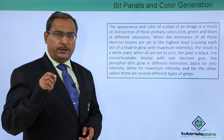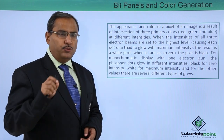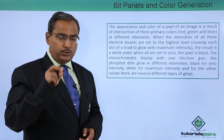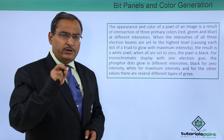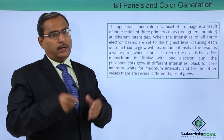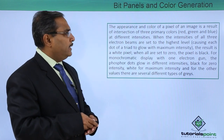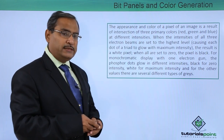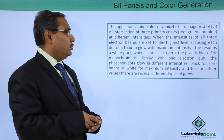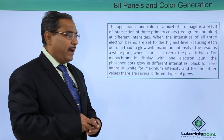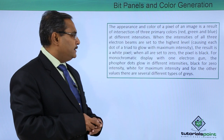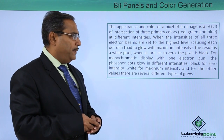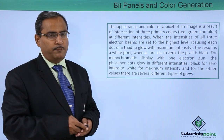We know that we are having the triad of three dots — red, green, and blue. How much intensity each of these three dots are having individually, the combined effect will produce the actual color. When the intensities of all three electron beams are set to the highest level, causing each dot of the triad to glow with maximum intensity, the result is a white pixel. When all are set to 0, the pixel will be black.